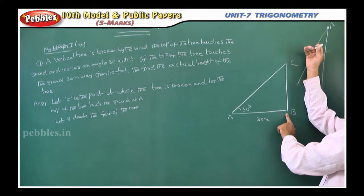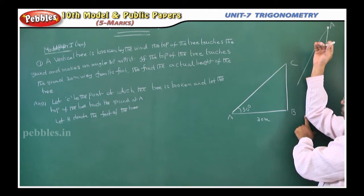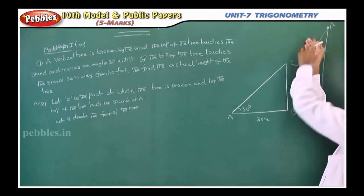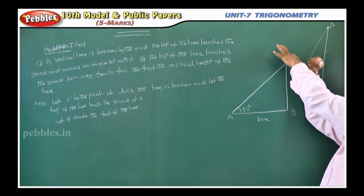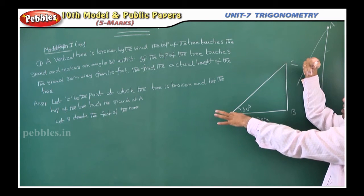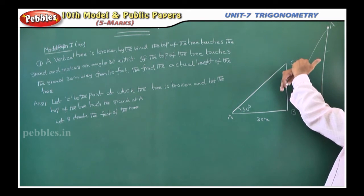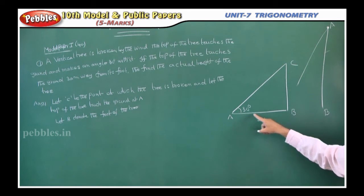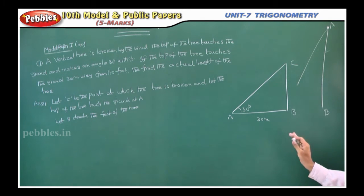B is the ground part of the tree. The tree touches the ground at point B like this. This is point A. Now it is bended like this. I am putting the new point C. This is making an angle of 30 degrees with the ground. What they are asking is what is the height of the tree? Full height I require.